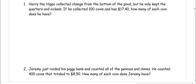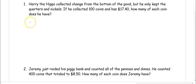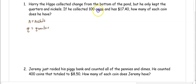When we look at this problem, we are trying to figure out how many quarters and nickels he has. So our variables: N is going to be for nickels, and Q is going to be for quarters. We know that he has 100 coins, so the number of nickels plus the number of quarters equals 100.